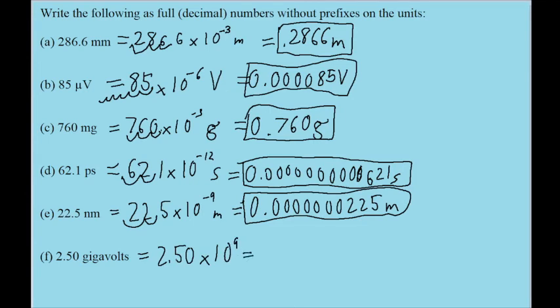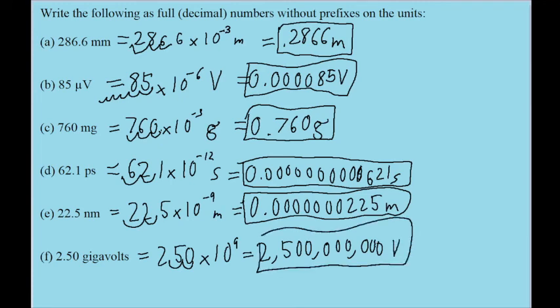So this time, we'll count forward. So it'll be 1, 2, and then we keep going to 9. So that's going to be 2.50 plus 7 more zeros. That's 2,500,000,000 volts. And that is our translation or conversion for Part F.